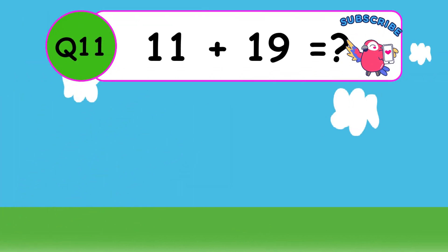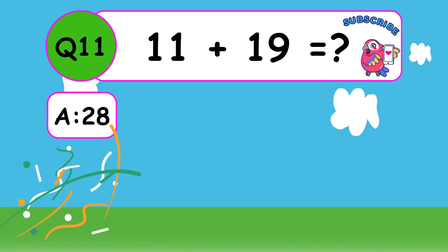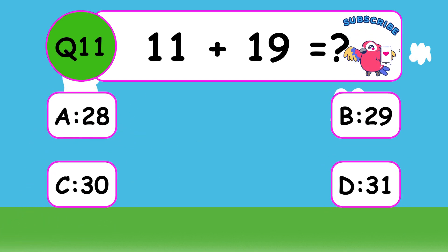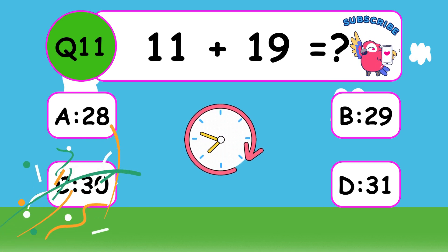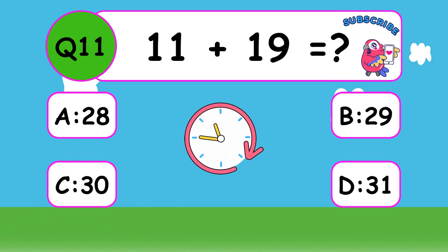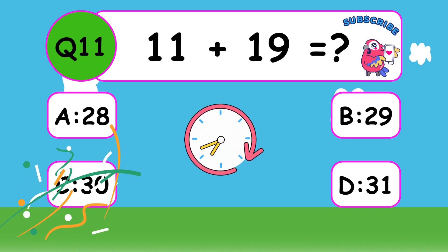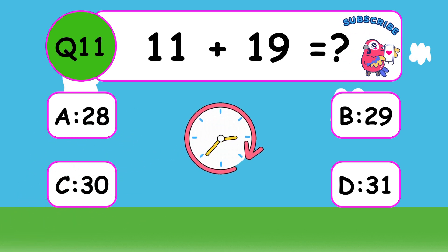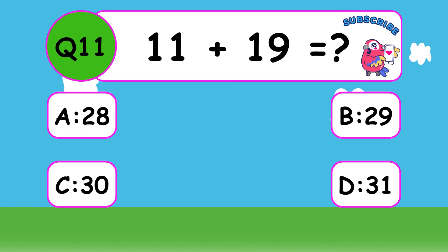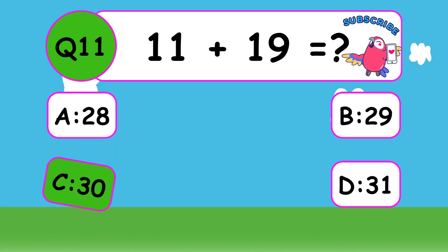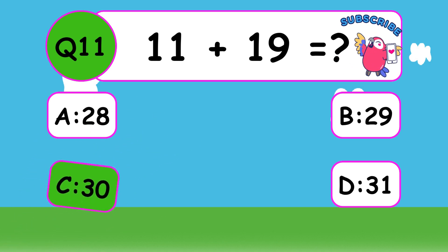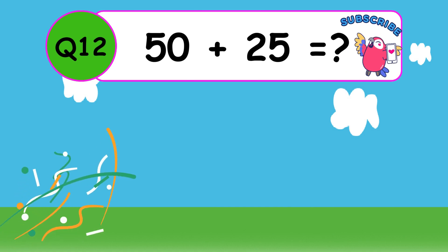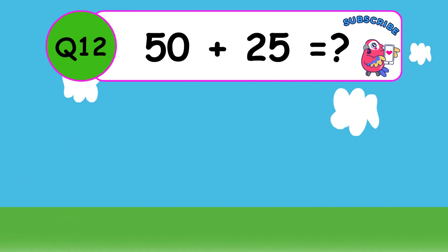What is 21 plus 19? The answer is C, 40. 21 plus 19 equals 40.